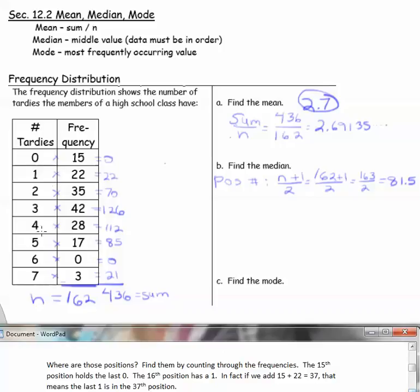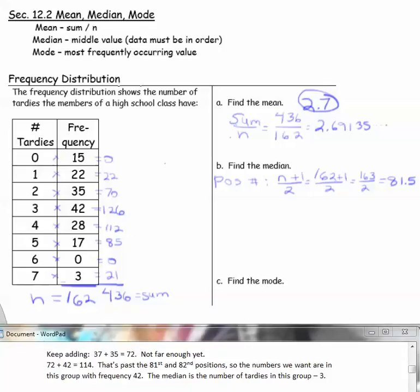Where are those positions? We find them by counting through the frequency column. The 15th position holds the last zero. That means the 16th position has a 1 in it. If we add 15 plus 22 equals 37, that means the last one is in the 37th position. The next one is 35. So if I add 35 plus the 37th position, that would be the 72nd position. We're looking for the 81st and 82nd position. That's not far enough yet.